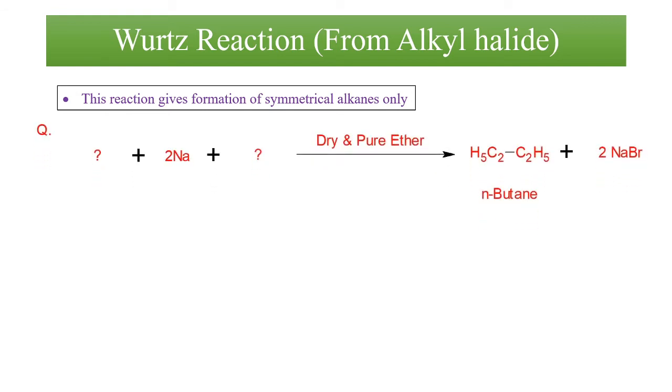Let us see this question. In this question, we have to find the reactant which will react with sodium to give the formation of n-butane. You can see that n-butane is a symmetrical alkane, so let us break this into two equal parts. So if we will break it into equal parts, we will come across the molecule, that is alkyl group, that is ethyl.